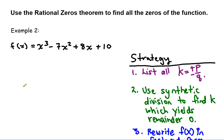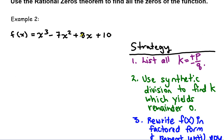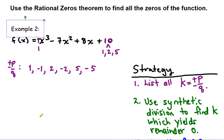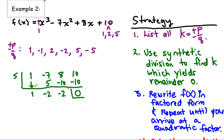Let's look at another example. f of x equals x cubed minus 7x squared plus 8x plus 10. We go through those same steps again. Step one: I took 10, the constant term, and found all numbers that divide evenly into it. The lead coefficient is just 1, so there was only one factor, making it really easy and fast to list all the possible p over q's, both positive and negative. Then in step two, I used synthetic division, starting with the easiest numbers. Some didn't work, but eventually I landed on one that gave a remainder of zero.